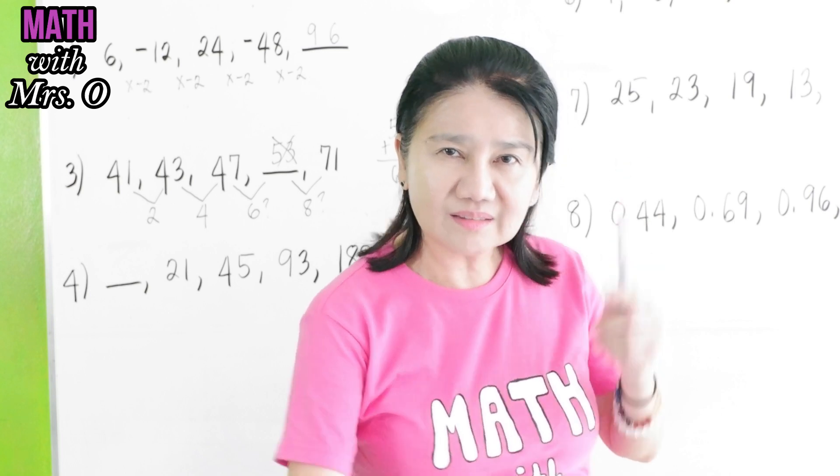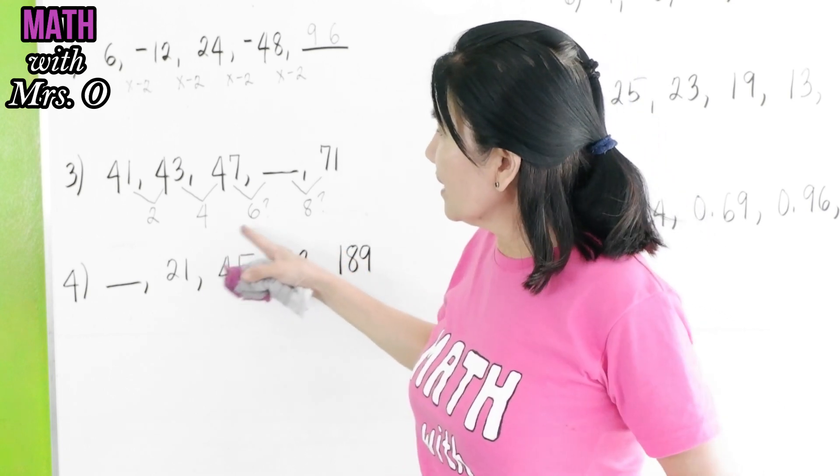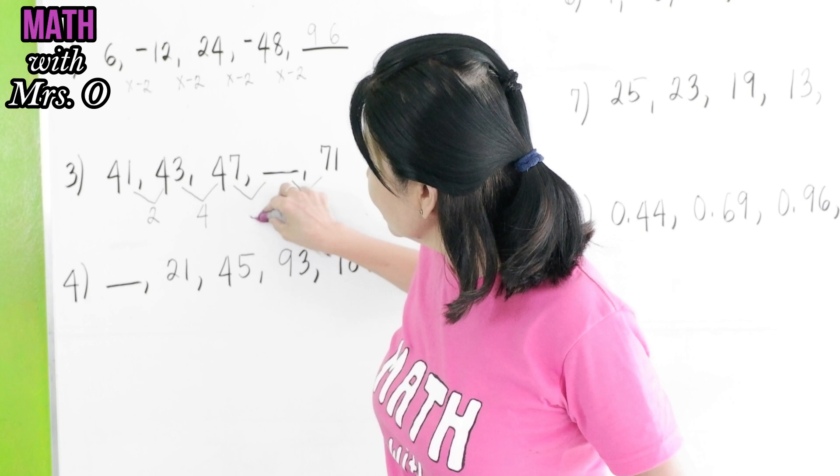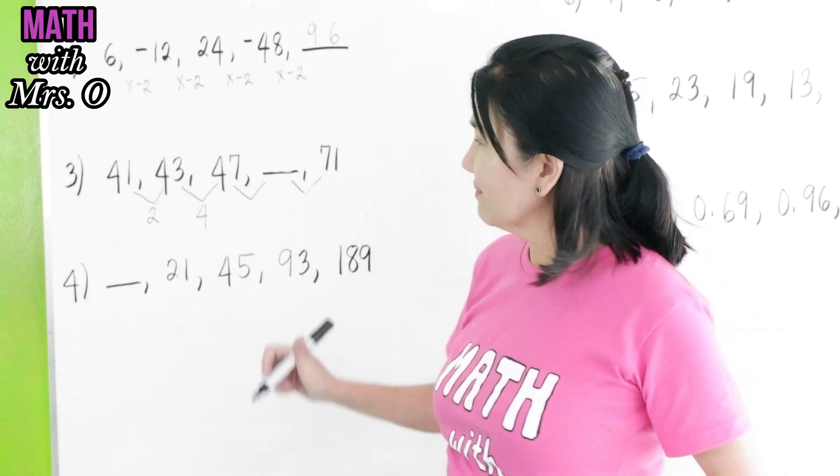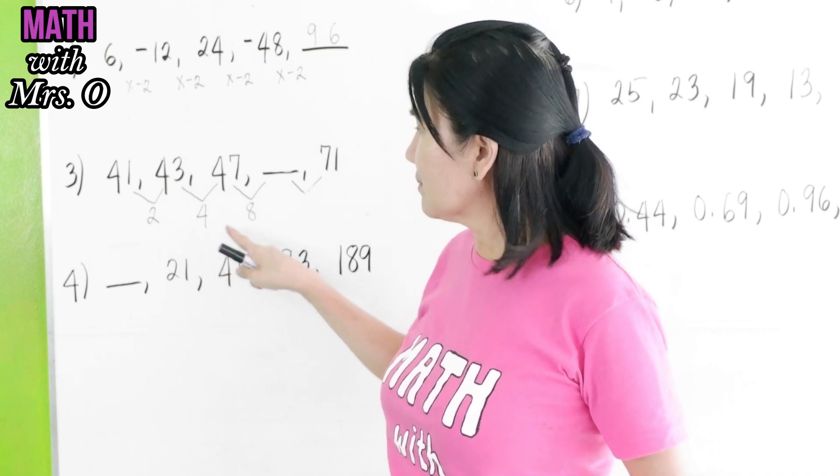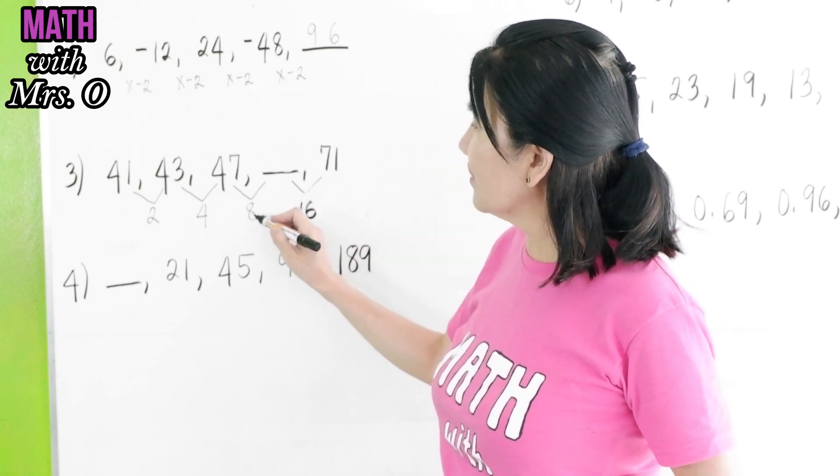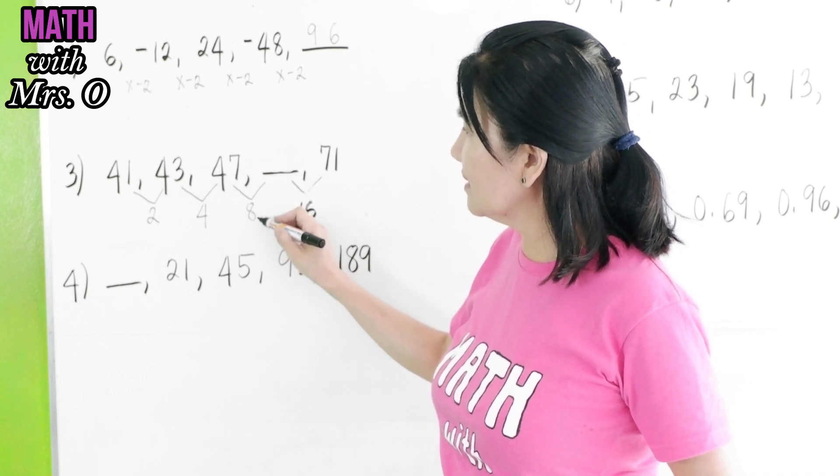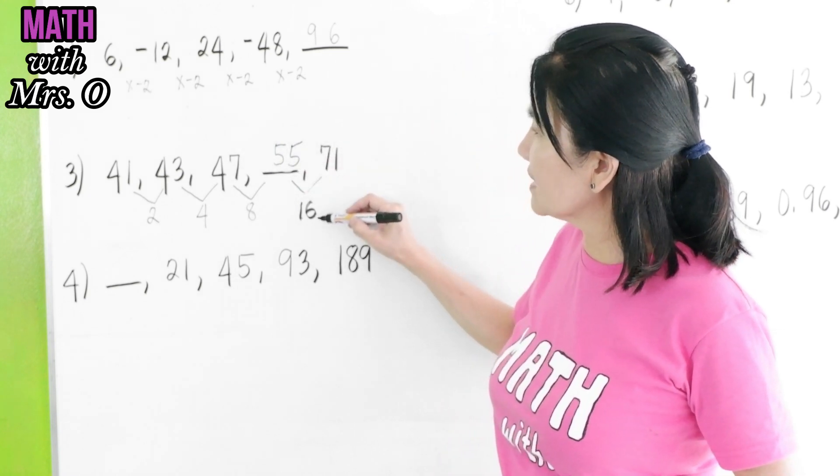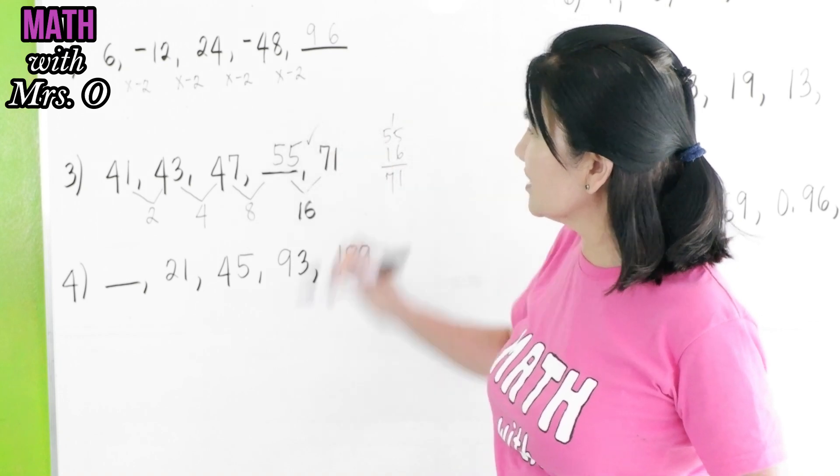In that case, you have to think and try to see what else is a possible number here after 4 if it is not 6. Have you thought of that? Let's try 8. How did I get 8? 2 times 2 is 4. 4 times 2 is 8. 8 times 2 is 16. If this is 8, 47 plus 8 gives you 55. Is 55 plus 16 equal to 71? Yes, that is 71. So the answer is 55.